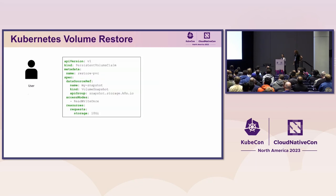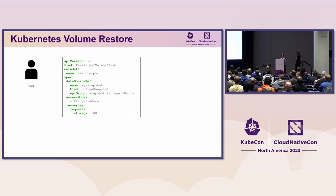When you want to restore your workload with a new disk, you create a new persistent volume claim object where you specify, as a data source, that volume snapshot. Kubernetes will then create a new volume and rehydrate that data from the snapshot. That's what's happening at the Kubernetes level of things.